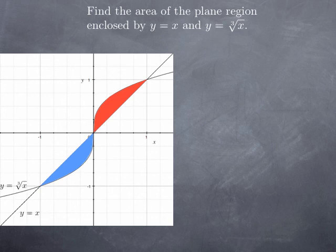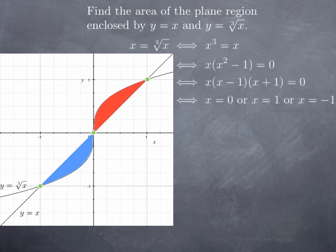You see from the picture that these two curves seem to intersect at x equals negative 1, x equals 0, and x equals 1.